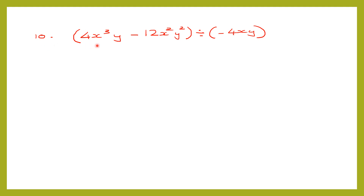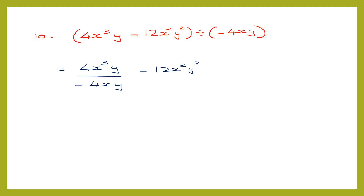Question 10. Here we have a binomial divided by a monomial. Whenever you have a binomial divided by a monomial, take each term and divide it by the monomial. So we write the first term 4 x cubed y divided by minus 4 x y, then the second term minus 12 x squared y squared divided by minus 4 x y.